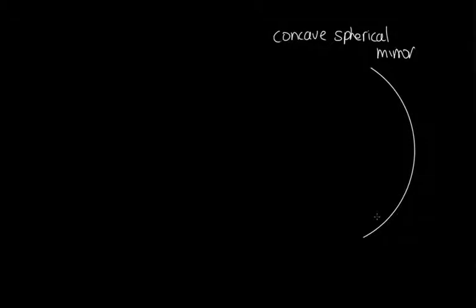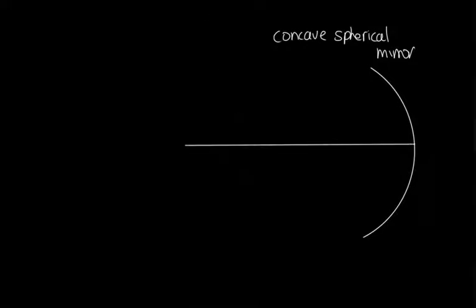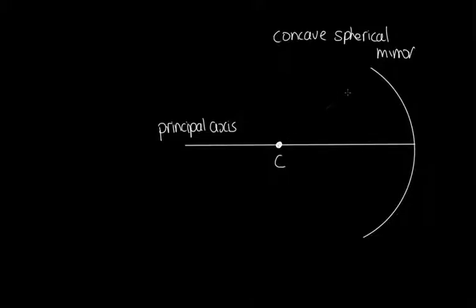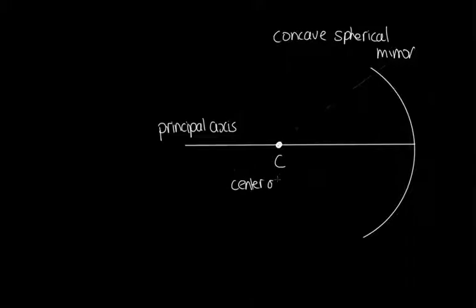Let's define some important terms in ray optics. The line through the middle of the mirror which is normal to the surface is called the principal axis. The radius of curvature of the mirror equals the radius of the sphere from which the mirror was cut — we call that radius C, and the distance from C to any point on the mirror is capital R. So C is the centre of curvature. A very important point is the focal point — where all the light rays converge.